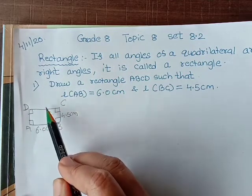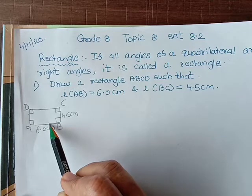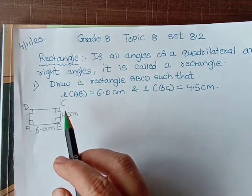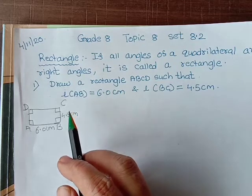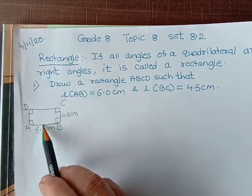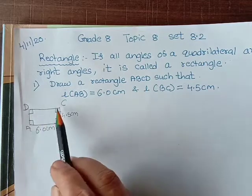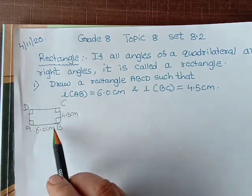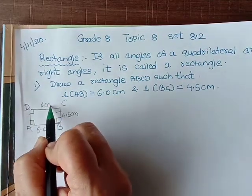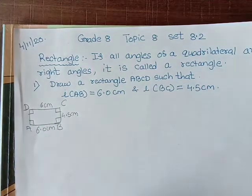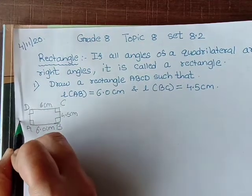Important properties of rectangle: all angles are right, opposite lines are equal. So this is length we say, and this is breadth. So if this is 6 centimeter, this also will be 6 centimeter. Opposite sides are equal. If this is 4.5, this also need to be 4.5.